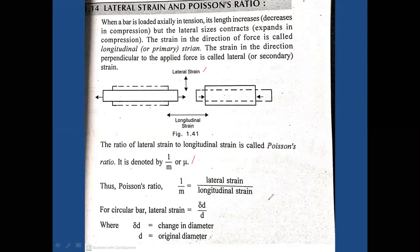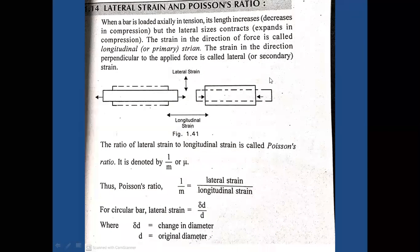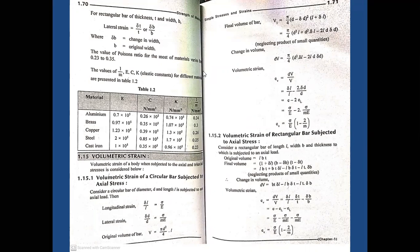Poisson's ratio: 1/m or mu equals lateral strain divided by longitudinal strain (linear strain). Lateral strain equals delta d by d, where delta d is the change in diameter and d is the original diameter. For a rectangular bar of thickness t and width b, lateral strain equals delta t by t and delta b by b. The value of Poisson's ratio for most materials varies from 0.23 to 0.35.